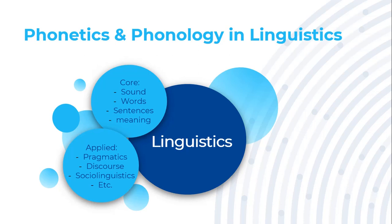The study of linguistics is divided into several categories, but the main ones are core linguistics and applied linguistics. Core linguistics includes the study of sound, the study of word formation, the study of the meaning of a word, and the study of sentence structure. In this video we are going to talk about the study of sound, which is phonetics and phonology.